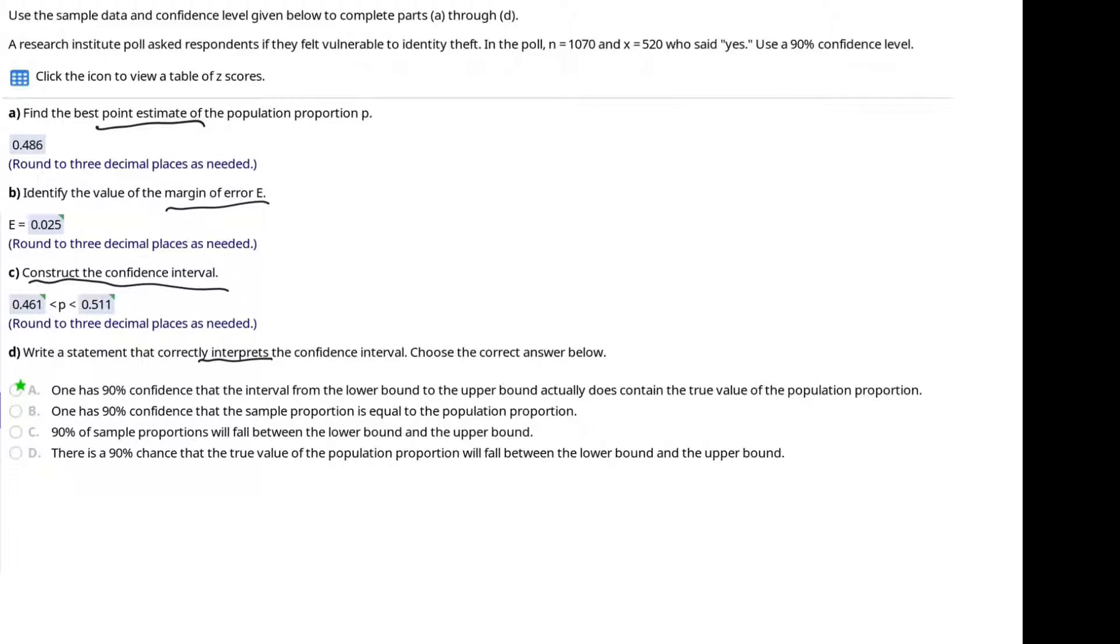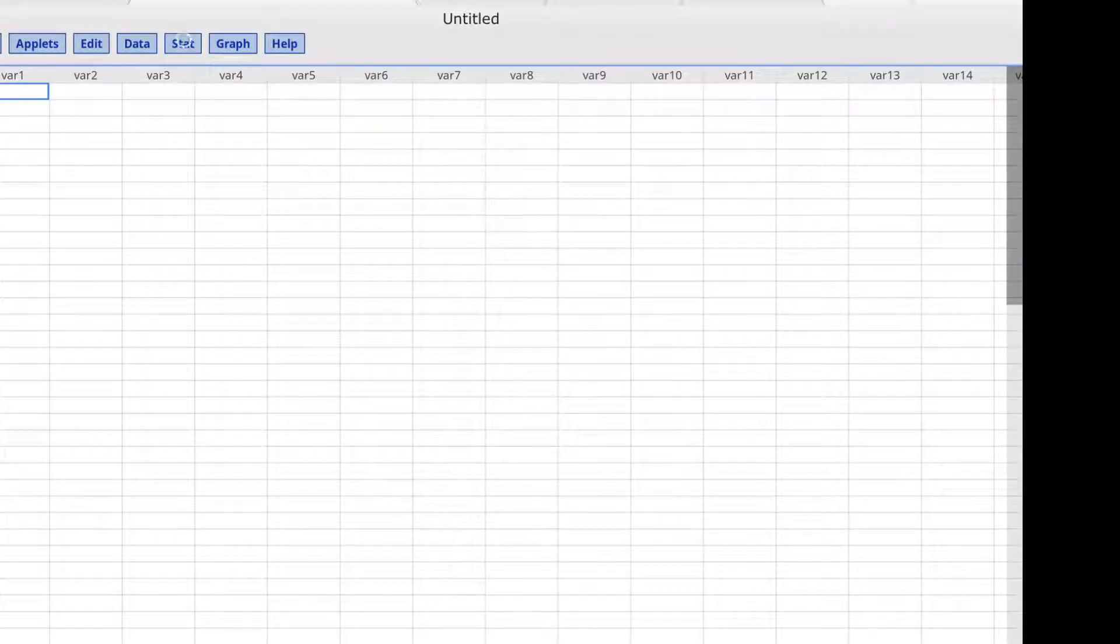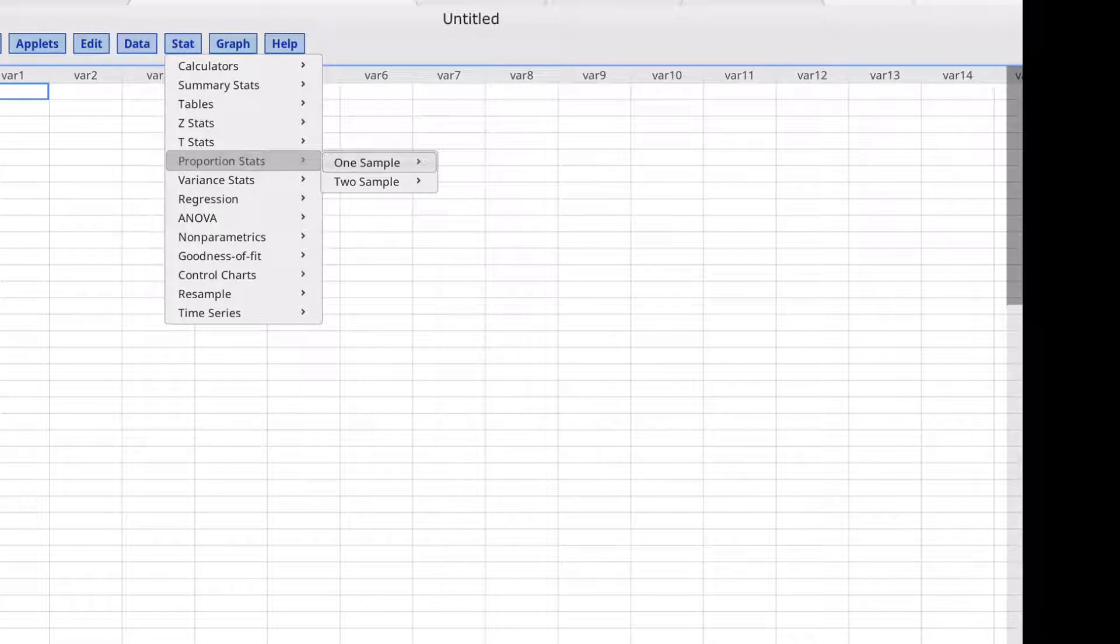We can use StatCrunch to find the point estimate, the margin of error, and to construct the interval. We'll click Stat, Proportion Stats,